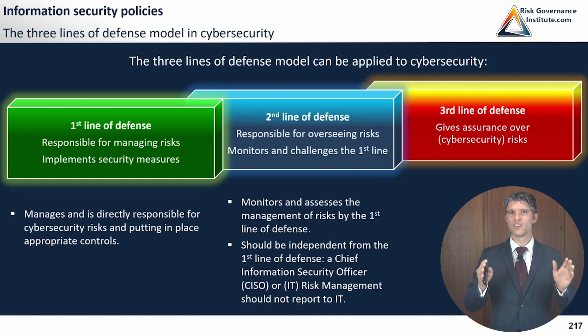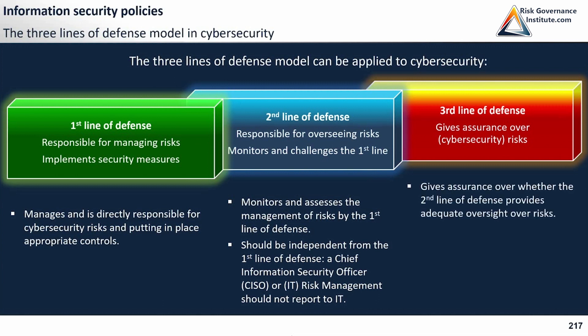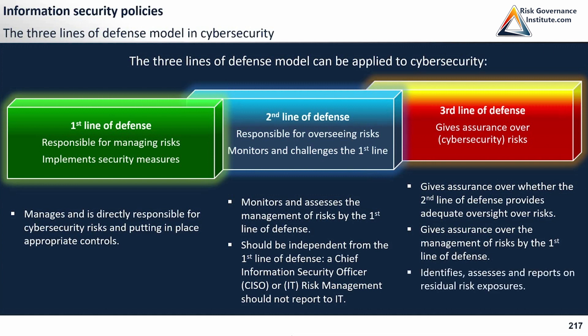It doesn't need to be a Chief Information Security Officer — it can also be a risk management function, not necessarily a full department, but those taking care of risk as a second line of defense. Finally, the third line of defense gives assurance over whether the two preceding lines of defense provide adequate oversight on risk and are controlling risks themselves — whether the second line provides adequate oversight and whether the first line is properly managing risk. We identify, assess, and report on residual risk exposures; in other words, we perform internal audits.